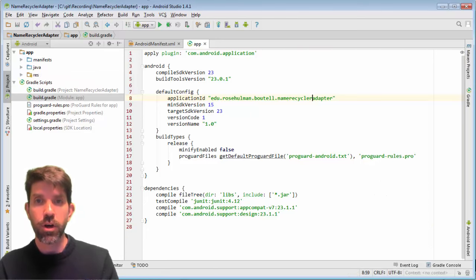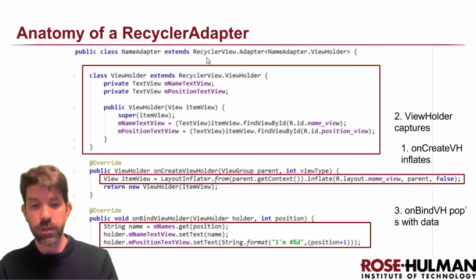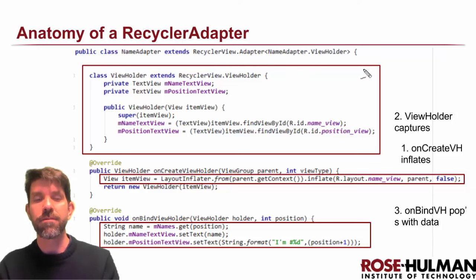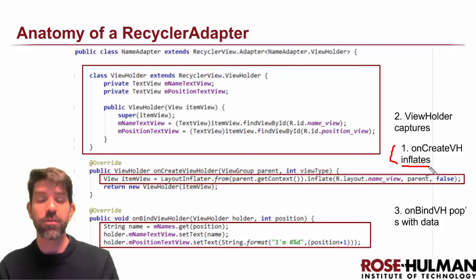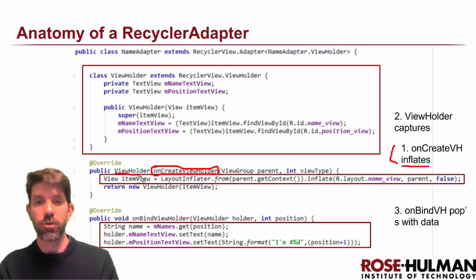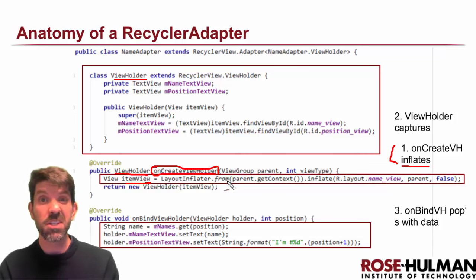Now I have a new project to modify. What does a RecyclerAdapter look like? The main thing to realize is that the functionality from getView has been split into three parts. First, we inflated a view if needed — there's a method that replaces that called onCreateViewHolder. onCreateViewHolder is responsible for returning a ViewHolder, which is a new inner class within the adapter.